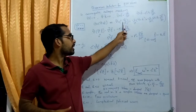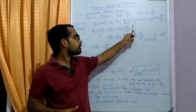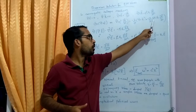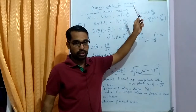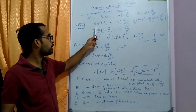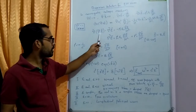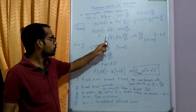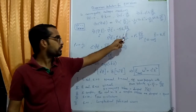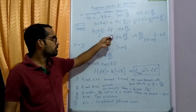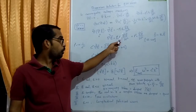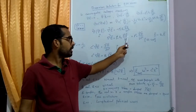This equals minus dou by dou t of (del cross B). Substituting for del cross B, this becomes minus dou by dou t of (mu_0 * epsilon_0 * dou E by dou t). Expanding the left-hand side: del(del dot E) minus del² E, where del dot E = 0, so this becomes minus del² E = minus mu_0 * epsilon_0 * dou² E by dou t². Removing the minus sign from both sides gives del² E = mu_0 * epsilon_0 * dou² E by dou t².